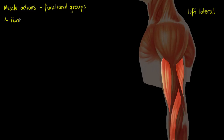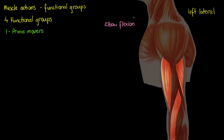The first thing we need to know is that there are four functional groups, and this naming is in relation to the type of movement we're trying to achieve. The first type is a prime mover. For this tutorial, the movement we are going to talk about will be elbow flexion — the movement you'd be doing if you were doing a bicep curl. A prime mover is the muscle responsible for the majority of the action, therefore it will have the highest workload of all the muscles involved.